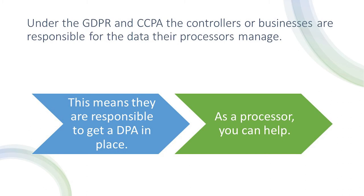With that terminology in mind, let's get to why we use a DPA and what it is. Under the GDPR, a controller is required to have a contractual relationship describing how personal information is going to be handled between the controller and its processor. That's where the DPA comes in — it talks about how that's going to happen, who will be responsible for what, and what security measures are going to be taken. There are also other reasons for a DPA, especially for US companies doing business with European clients.